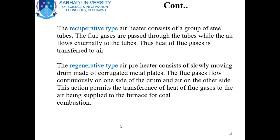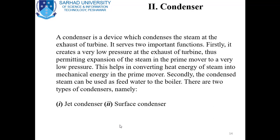Number two constituent is the condenser. A condenser is a device which condenses the steam at the exhaust of the turbine. It serves two important functions: firstly, it creates a very low pressure at the exhaust of the turbine, thus permitting expansion of steam in the prime mover to a very low pressure, which helps in converting the heat energy of steam into mechanical energy.